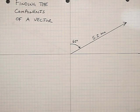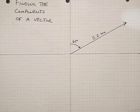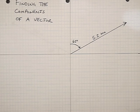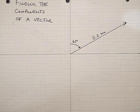Sometimes it's useful to measure what's called the components of the vector. The components of the vector basically mean the amount of the vector which is directed along the x-axis and along the y-axis.